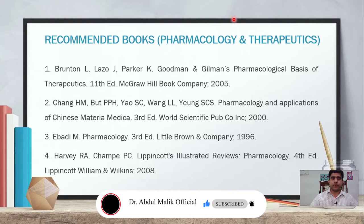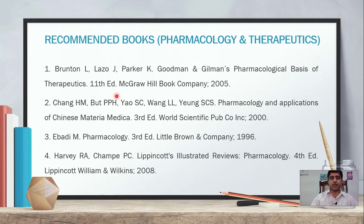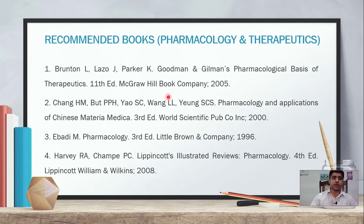Recommended books include: Brunton L, Lazo J, Parker K — Goodman and Gilman's Pharmacological Basis of Therapeutics, 11th edition, McGraw-Hill, 2005. This is an older edition; newer editions such as the 13th are now available. You can purchase the latest version for studying.